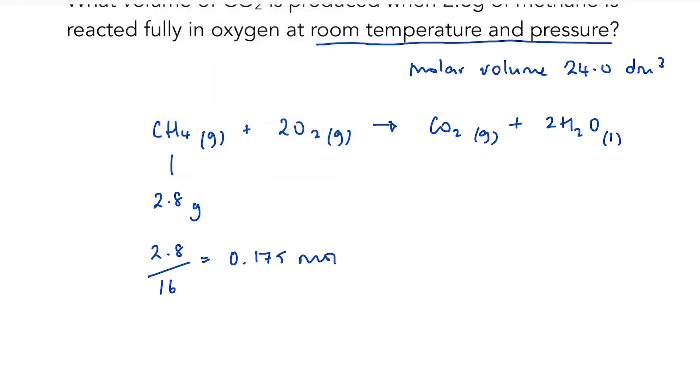I can see from my balanced equation that one mole of methane will produce one mole of carbon dioxide. But I haven't got one mole of methane; I've got 0.175 moles of methane. So the number of moles of carbon dioxide produced is 0.175.